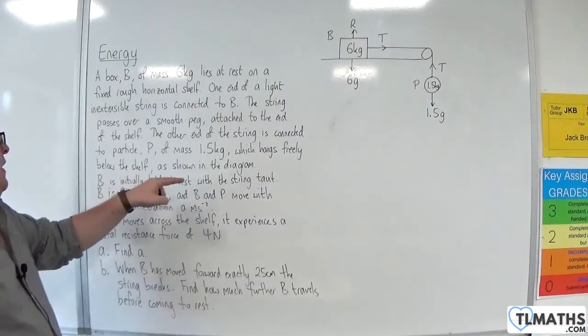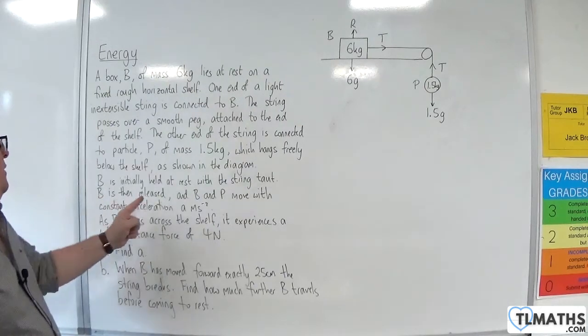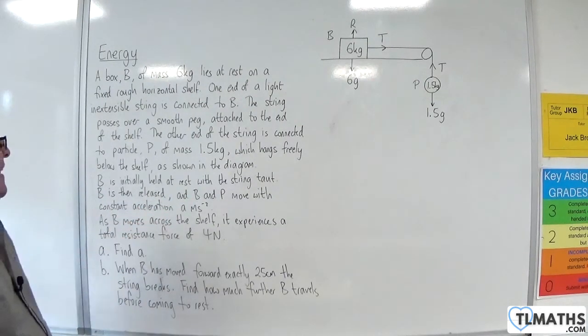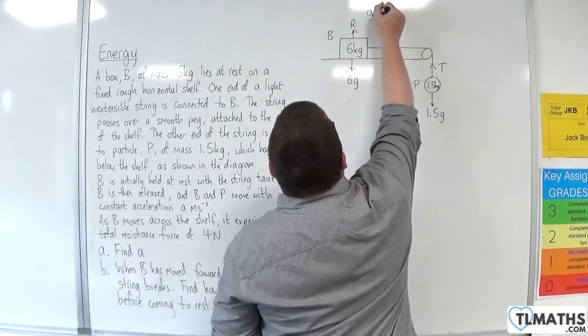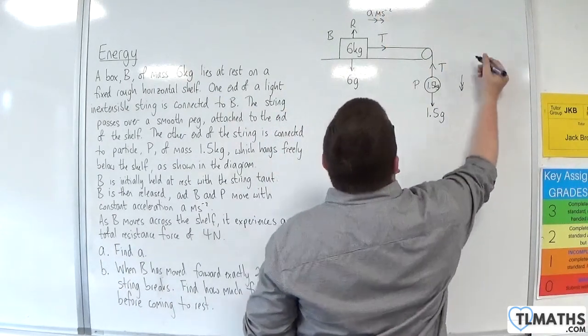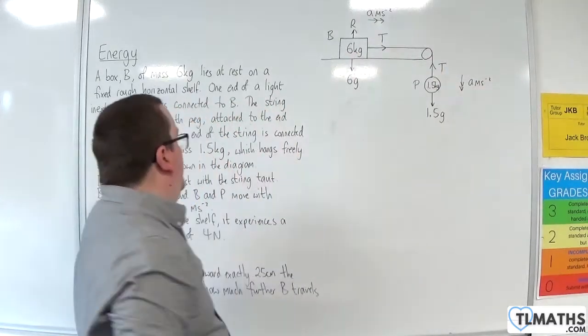B is initially held at rest with the string taut. B is then released, and B and P move with constant acceleration A meters per second per second. OK, so that will be the direction of motion. So, B will move to the right, P will move downwards.